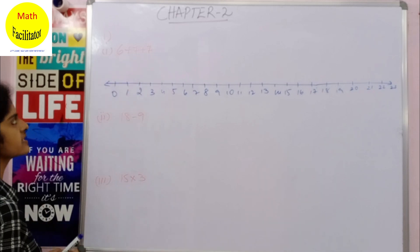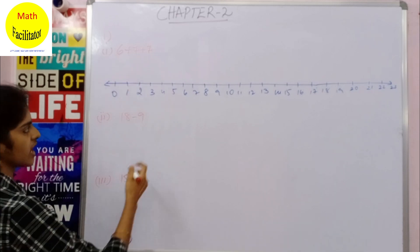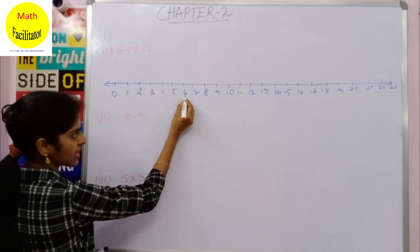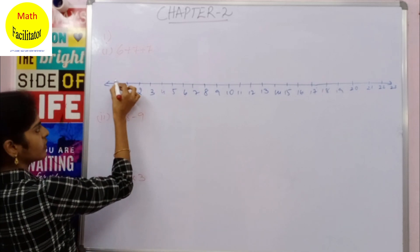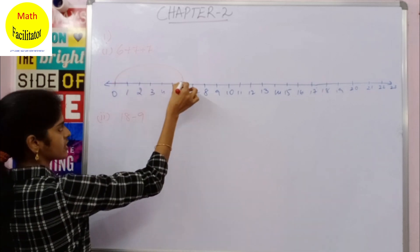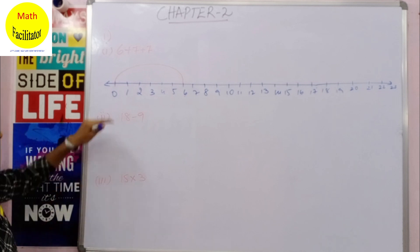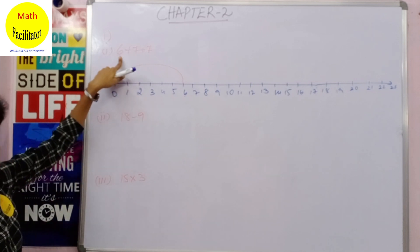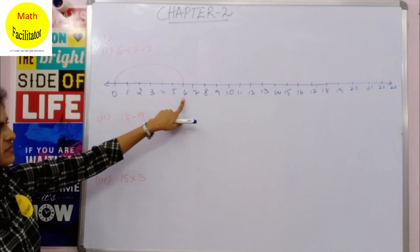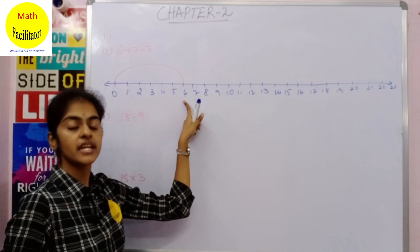Firstly let us mark 6 — you have 6 here, that means from 0 to 6 you have the point 6 here. Now you are adding 7 to 6, so from 6 how many steps will you move?